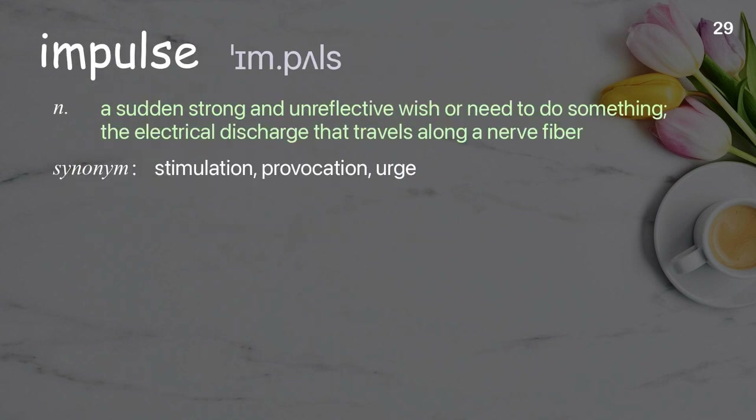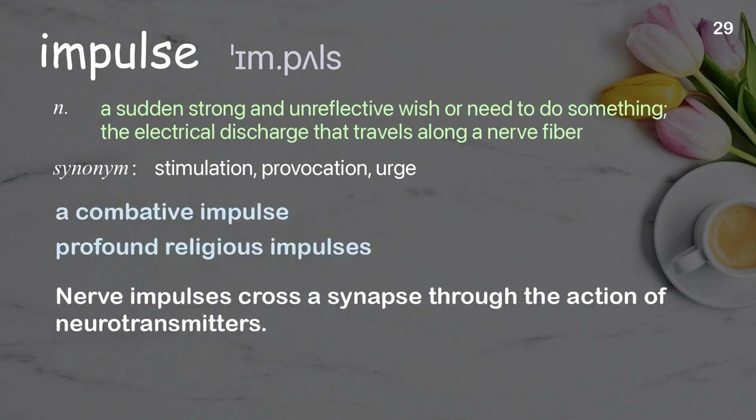Impulse: a sudden strong and unreflective wish or need to do something; the electrical discharge that travels along a nerve fiber. Examples: A combative impulse. Profound religious impulses. Nerve impulses cross a synapse through the action of neurotransmitters.